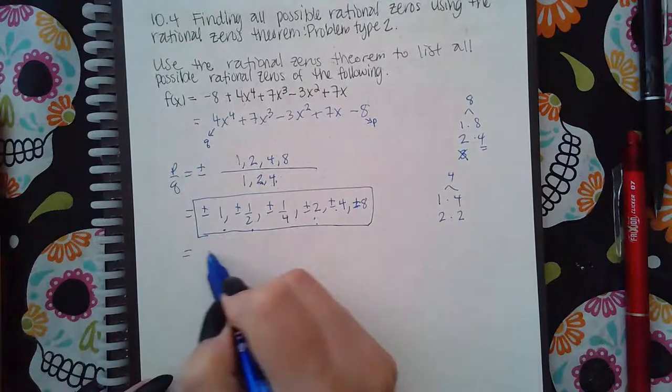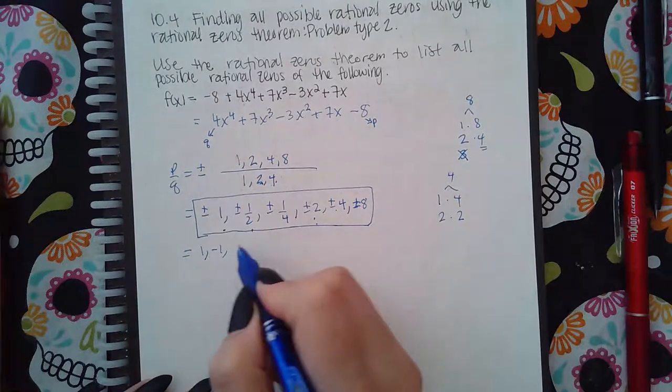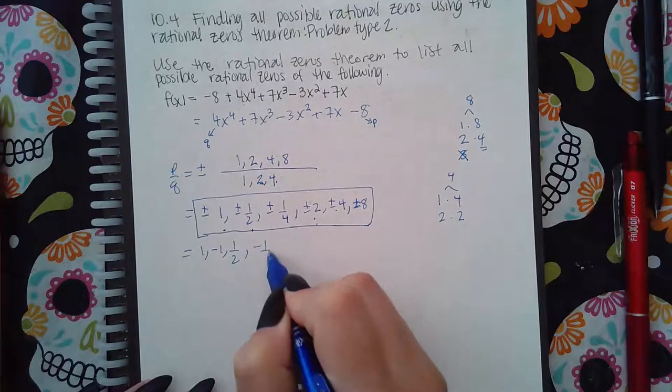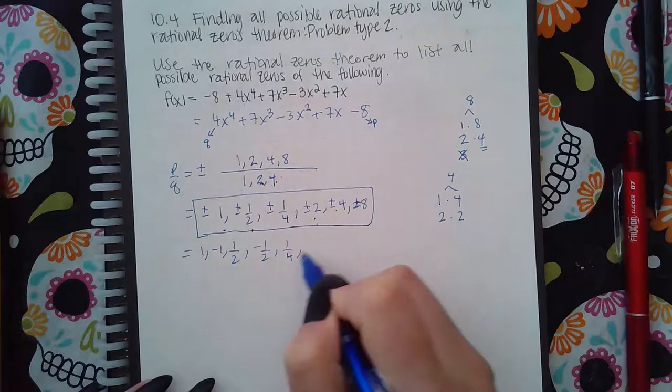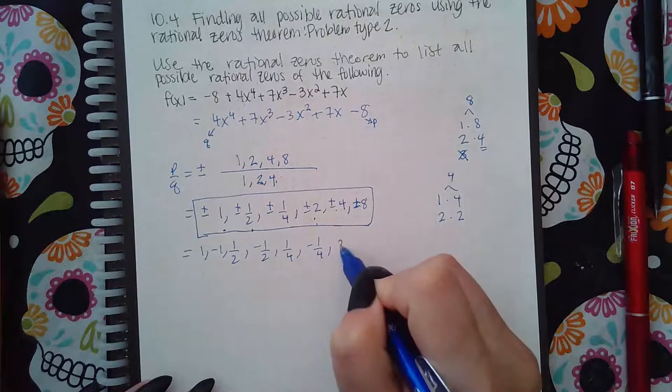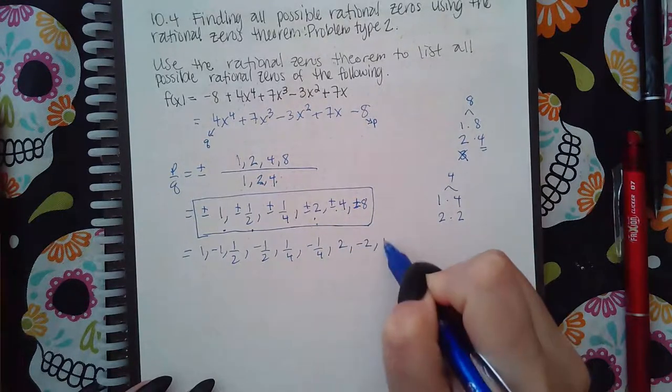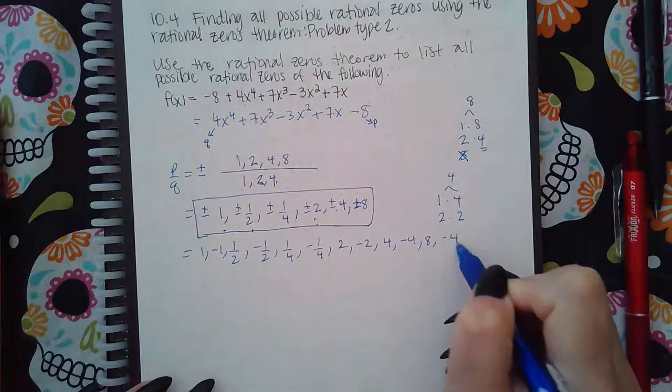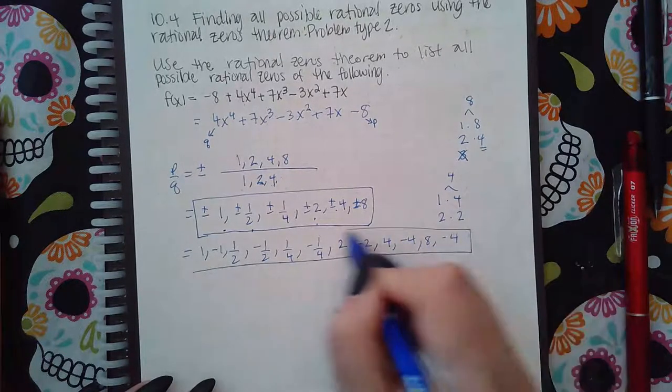And if you need to write the expanded version if you don't want to use the plus or minus button that's okay. Just make sure you include every single number and its sign variations. So the positive and the negative versions of each of those numbers.